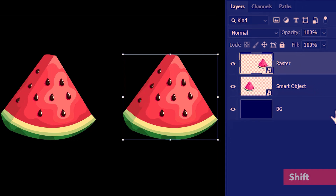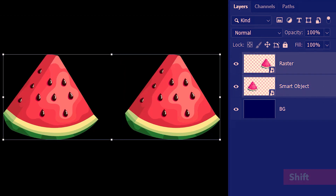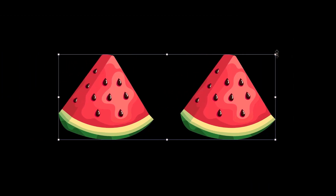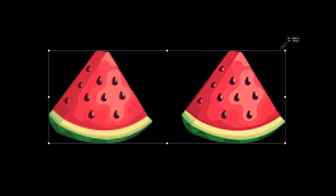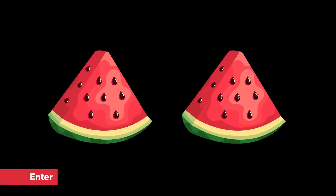Let's see what changes it has brought to this watermelon. I'm going to select both of them like before, scale them down, select them once more and scale back up. You can see that this watermelon is no longer pixelated.